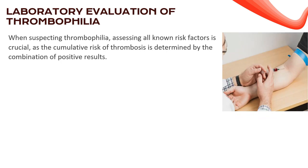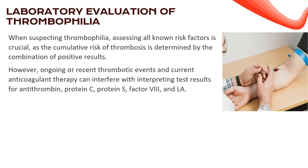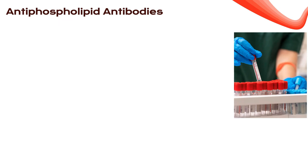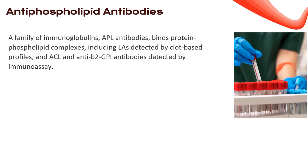When suspecting thrombophilia, it's all about assessing the known risk factors. The cumulative risk of thrombosis is like a puzzle — each positive result adds a piece. Timing is everything: ongoing or recent thrombotic events and current anticoagulant therapy can affect interpretation. Assays for antithrombin, protein C, protein S, factor VIII, and lupus anticoagulant (LA) should be conducted at least 14 days after discontinuing anticoagulant therapy.